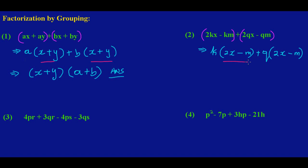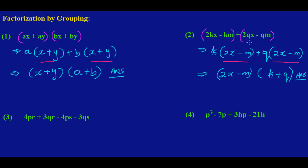If you look carefully, we have the same expression inside both brackets: 2X minus M here, and 2X minus M there. I said initially that having the same thing inside both brackets confirms we're on the right track. So I rewrite one bracket as (2X − M) and combine what's on the outside: open bracket, K plus Q. You can expand to double-check and get back the original expression.